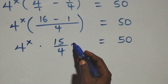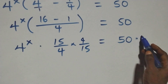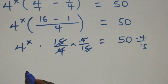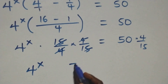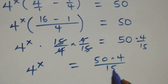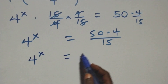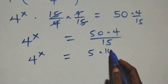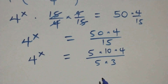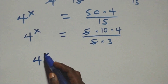Here we remove this 15 over 4 — that is, we multiply both sides by the reciprocal, which is 4 over 15. Also multiply this side by 4 over 15. These cancel each other and we have 4 raised to power x equals 50 times 4 over 15.